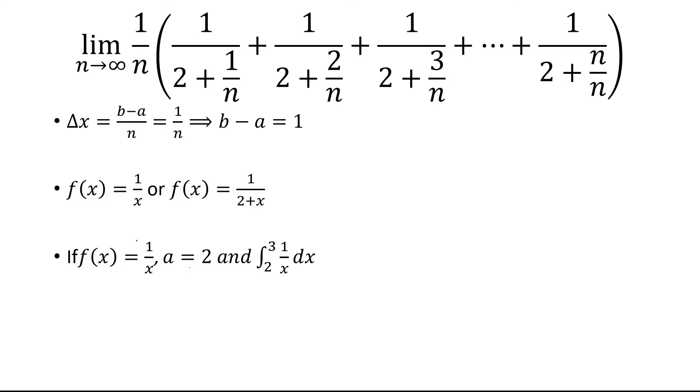So let's say if our function is 1 over x, then a has to equal 2. So why is that? Well, what is f of 2? So if we go back, we said a plus i delta x. So a is 2, we said. i delta x is 1 over n. And if f of x is 1 over x, we're just going to plug in 2 plus i times 1 over n in for x. So we get this 2 plus i over n. And that's what this stuff is.